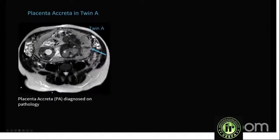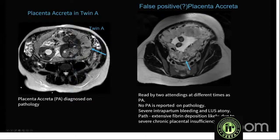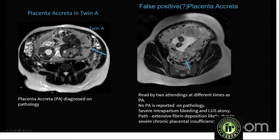A pitfall example: a twin pregnancy where Twin A had a dark area within the placenta, reported by two attendings as placenta creta — but pathology showed no creta. The patient had severe intrapartum bleeding and lower uterine segment atony, but pathology revealed extensive fibrin deposition due to chronic placental insufficiency — an area of infarction, not a dark intraplacental band from placenta creta. This was a false positive case.